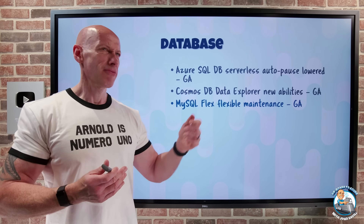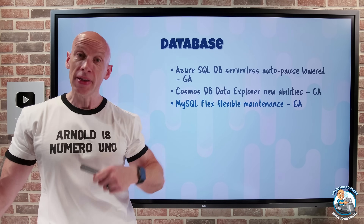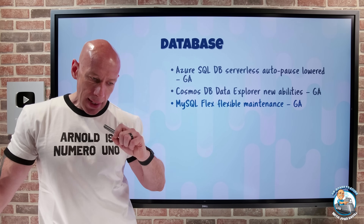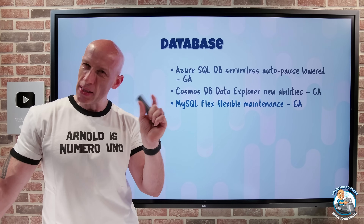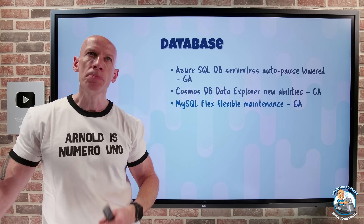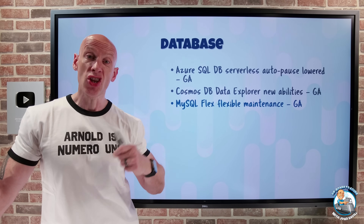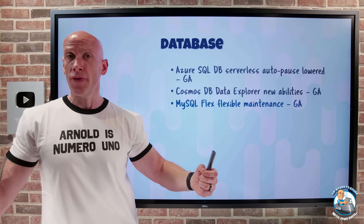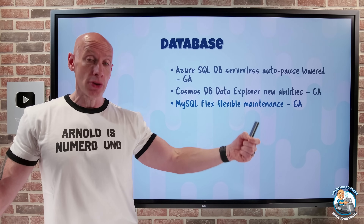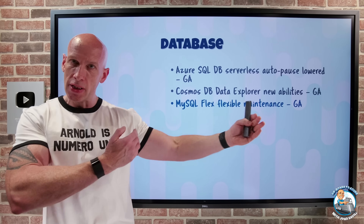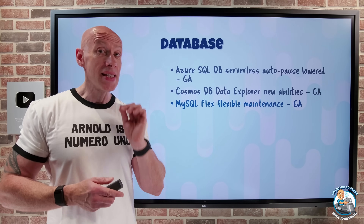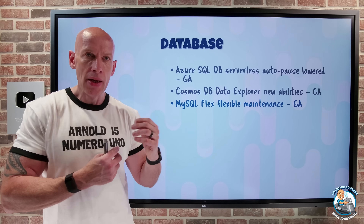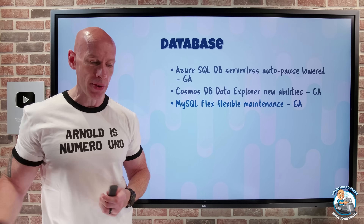MySQL Flexible now has flexible maintenance in GA. Obviously there's maintenance that occurs and you get notification of it. What you can now do is actually reschedule the maintenance — there's a maintenance ID you get told about in your service health alerts and you can reschedule it. Now in GA, it's up to 30 days you can push it back, compared to 14 days during preview. So you get the notification, say it's not convenient, and schedule maintenance within 30 days. That's done through the CLI today. And don't forget, you can still set maintenance windows proactively through the portal or CLI.